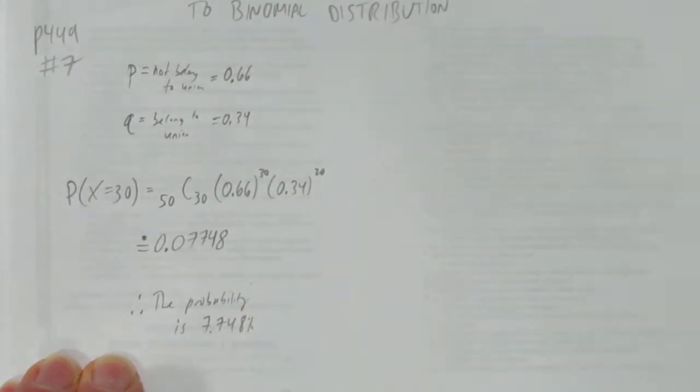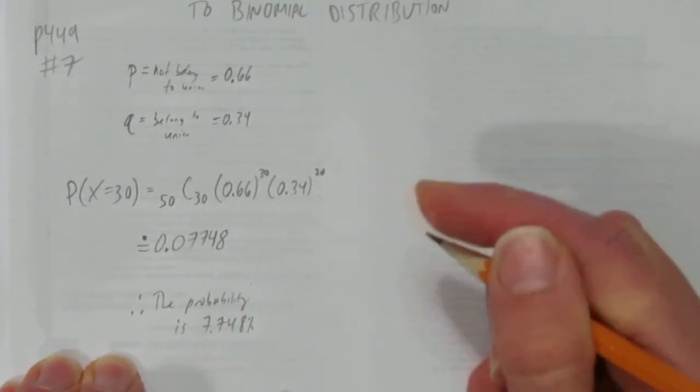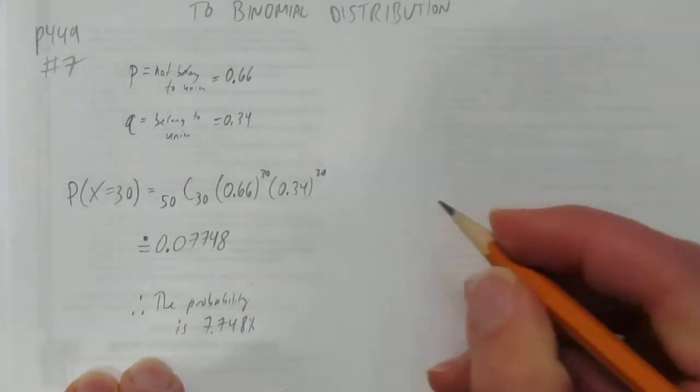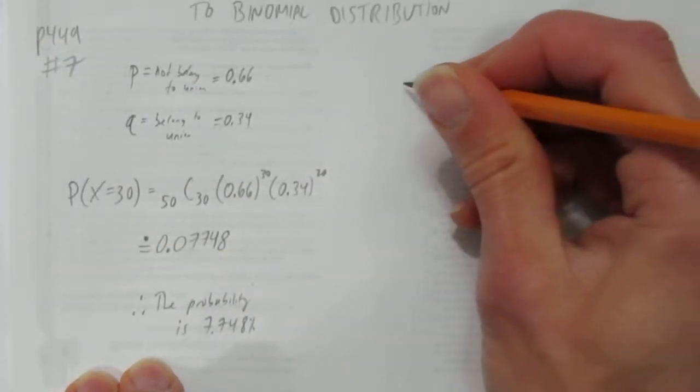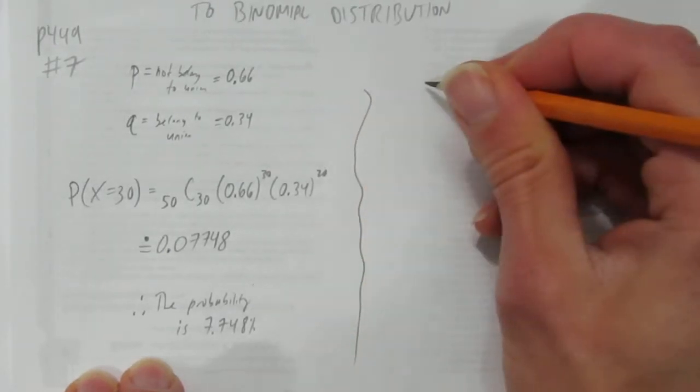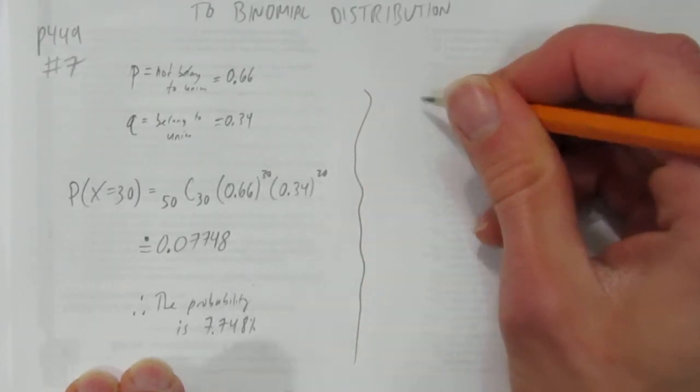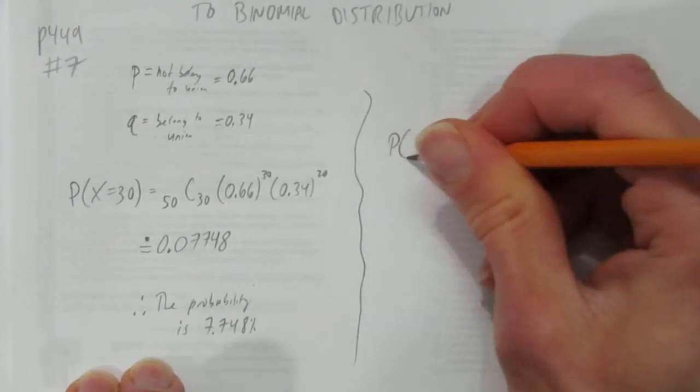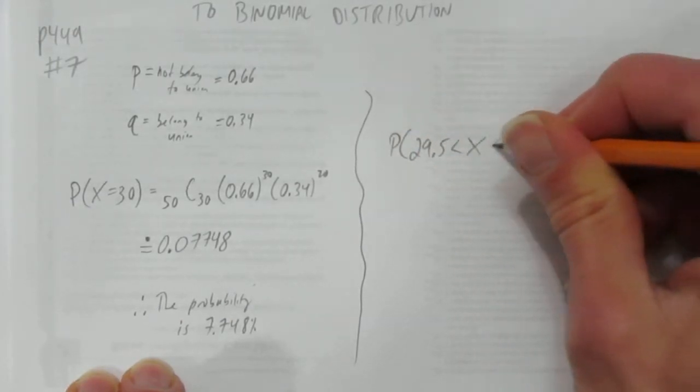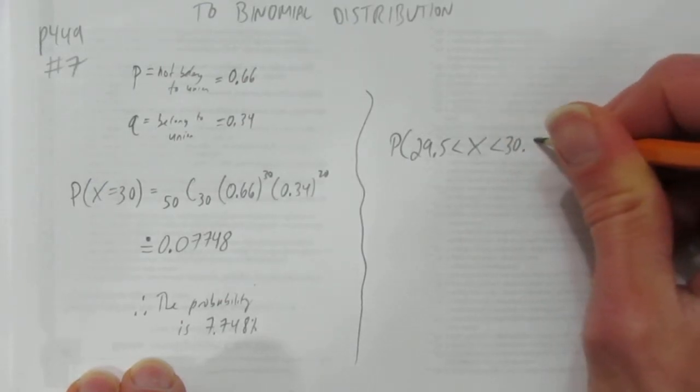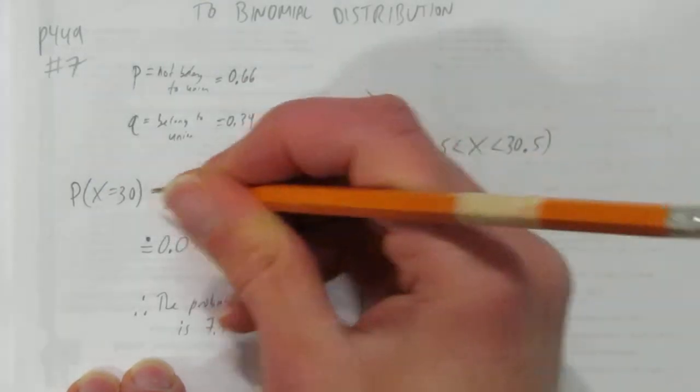What we really want to conclude on though is how good the normal approximation works. So how do you use the normal approximation here when it's one exact value? What we do, put a little line here, is we're going to use the normal approximation and we'll say what's the probability that you're between 29.5 and 30.5. And that will give us a good approximation of being exactly 30.